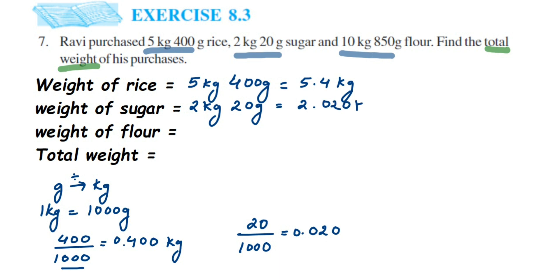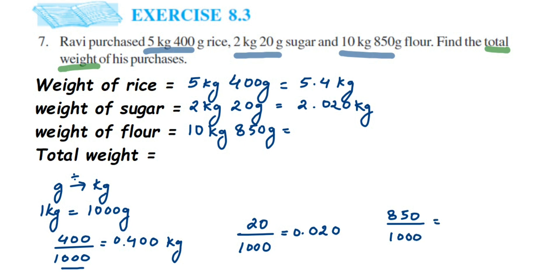The next item is flour: 10 kg and 850 grams. We convert 850 grams into kg by dividing by 1000. Placing the decimal three digits from the right, 850 becomes 0.850. Adding this to 10 kg gives 10.850 kg.